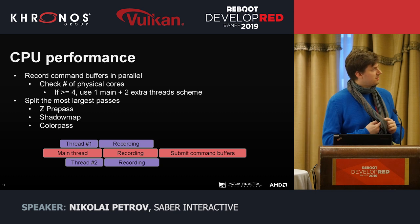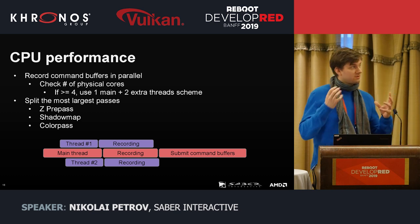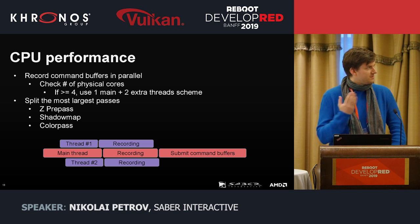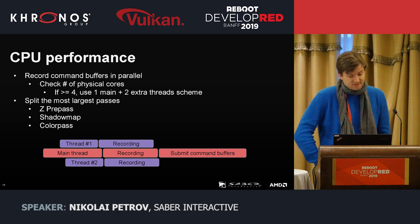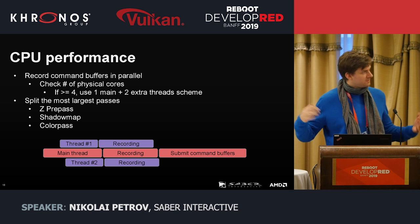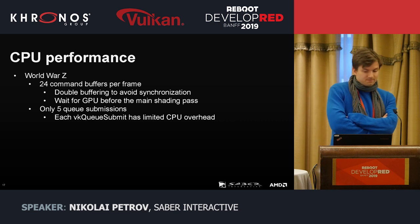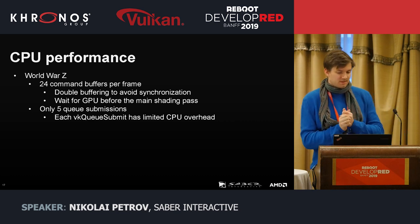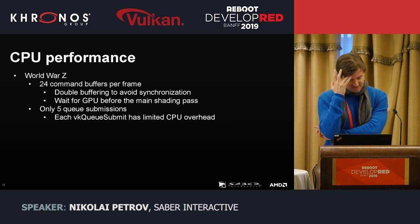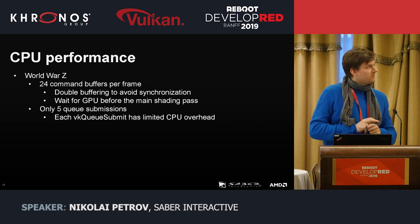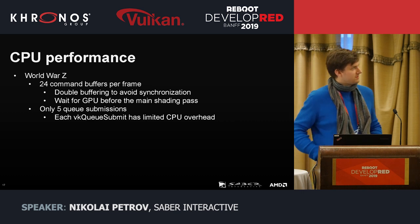It is obviously best to use multiple threads for the parts of the frame workflow where the number of draw calls is really large. Our main targets are the Z-pre-pass, the shadow map pass — especially when drawing many splits for directional lights — and the main shading pass including opaque objects, transparent objects, and particles. It is also very important to submit enough work to hide the operating system's scheduling latency. In World War Z, we do only five queue submissions with approximately 24 command buffers recorded per frame.